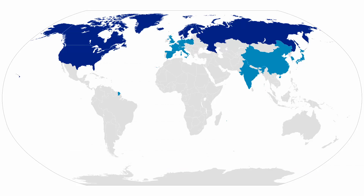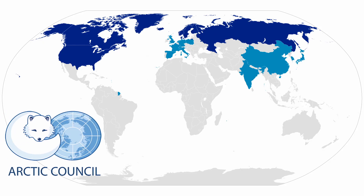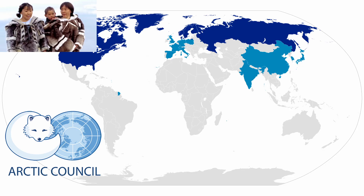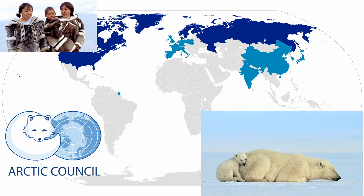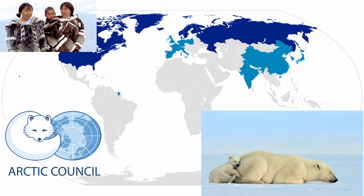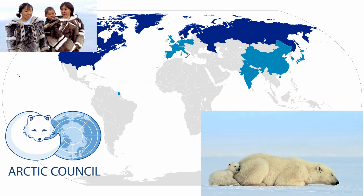Lastly, there are environmental supranational organizations, the most important one being the Arctic Council, which includes many countries in the northern hemisphere and all of the ones that border the Arctic Ocean. It exists to protect the environment and the indigenous people in and near the North Pole, and they come up with ideas that promote sustainable development to protect ecosystems that house animals like polar bears.